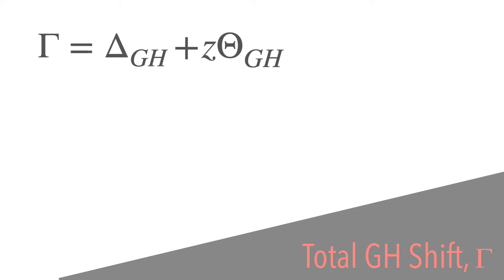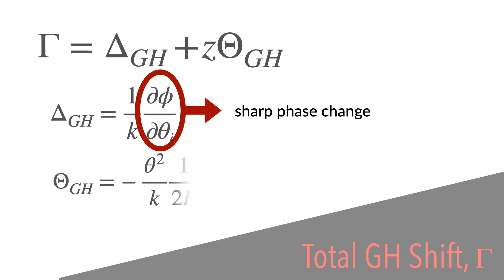By looking closely at the equation, you can see that large spatial Goos-Hänchen shift can be obtained if there is a sharp phase change, and large angular Goos-Hänchen shift can be obtained if there is a sharp reflectivity change. This occurs when exciting surface plasmons at resonance.